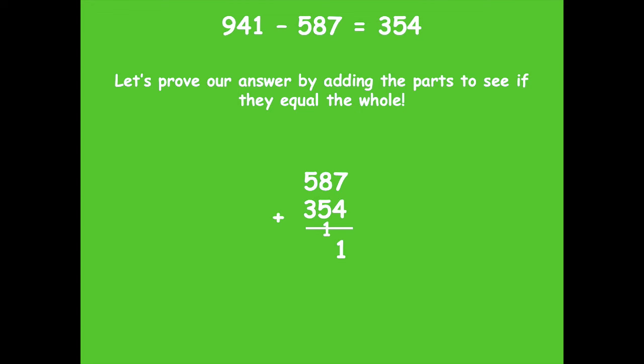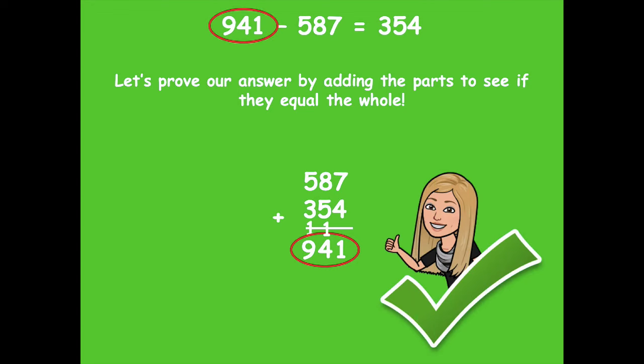We'll move to the tens place. Eight tens plus five tens plus one more is 14. So that's four tens, one hundred. Then we move to our hundreds place. Five plus three plus one more is nine. So look friends, 941 equals 941. We did it. Awesome.